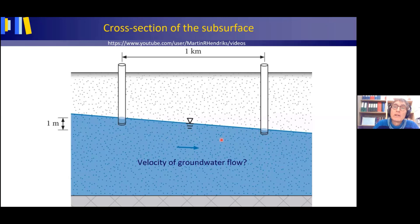Can we estimate the velocity of groundwater flow? If yes, we can determine how long it takes for a conservative pollutant at the left piezometer screen to reach the right piezometer screen. A conservative pollutant is one that does not interact with the ground mass — it simply goes with the flow. Yes, we can estimate the velocity, and for this we make use of Darcy's law.